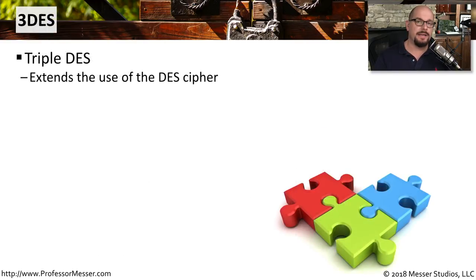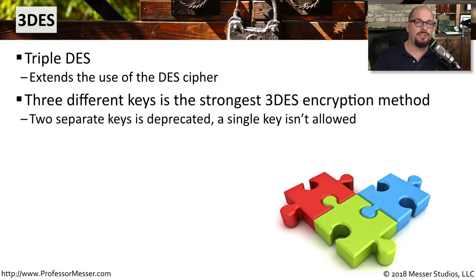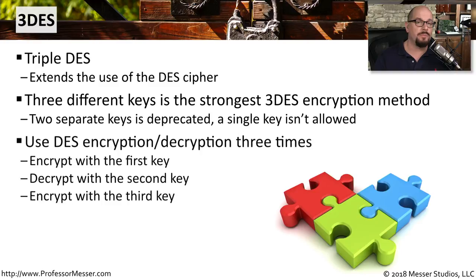A variant of DES called Triple DES was used to extend the use of the DES cipher. Triple DES uses three different keys to perform its encryption process. It actually performs three separate passes through the data — that's the triple in Triple DES.